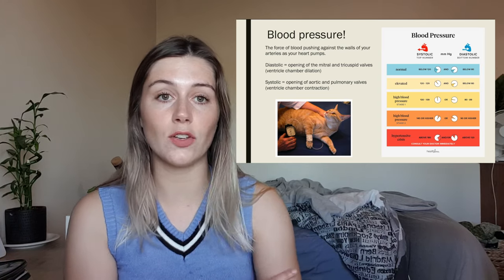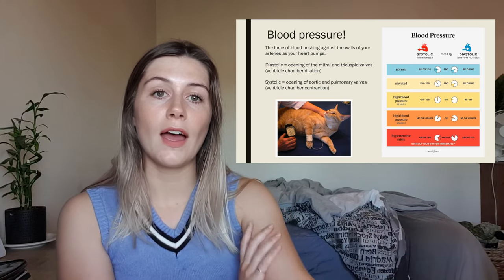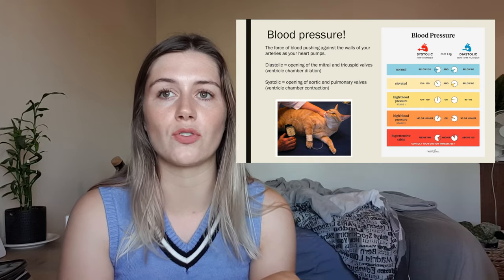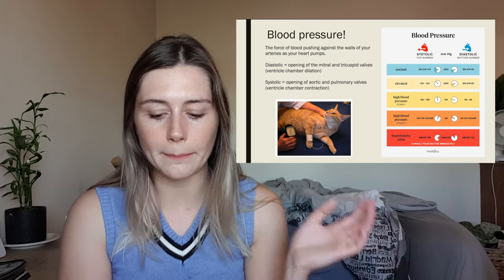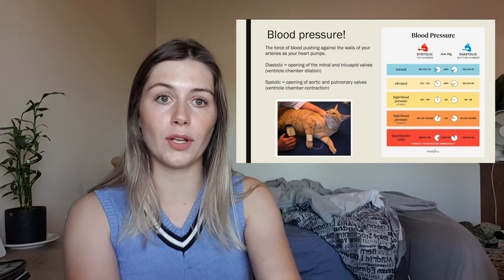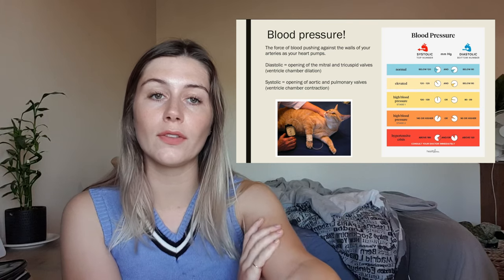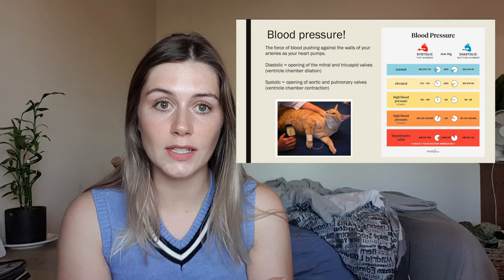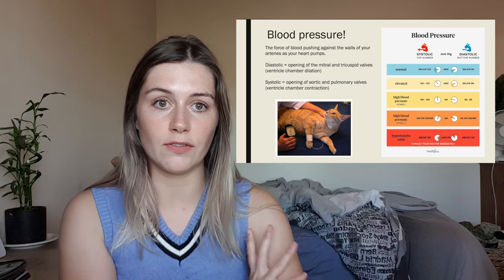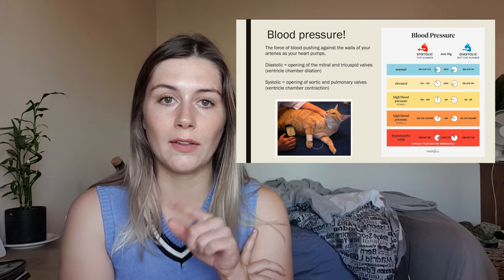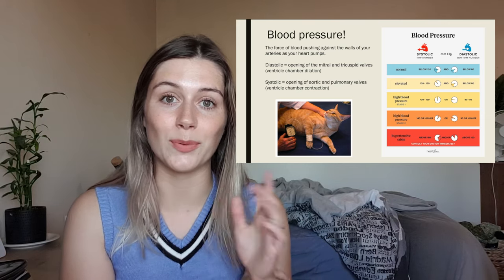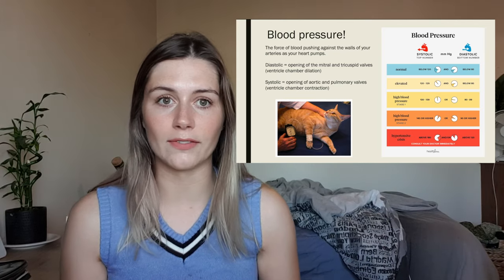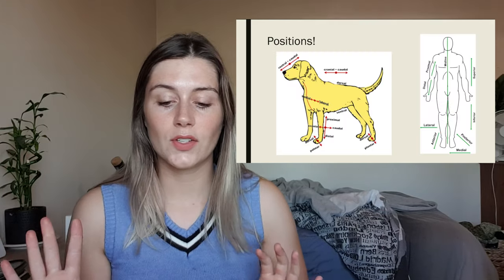In animals and humans they use a little cuff to measure blood pressure. You can do it lots of different ways, but the main way is by putting a little cuff on the animal's arm — you've probably had it done when you go to the doctor. They inflate some air into it and the measuring device on the side will tell you the blood pressure.